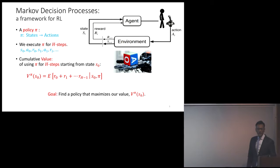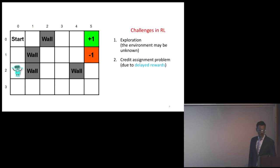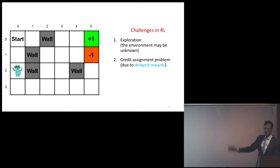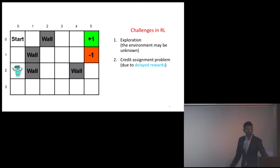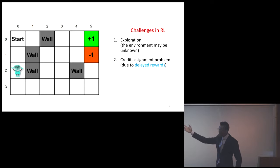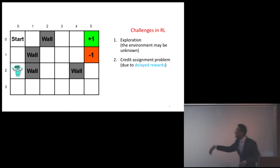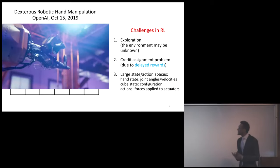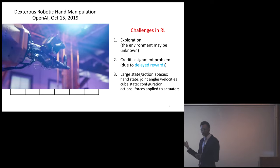What are the challenges in reinforcement learning? First, there's exploration — we might not know the environment, so the agent needs to wander around and might not know the dynamics. There's also the credit assignment problem: maybe it got a minus one reward but doesn't know which action it did wrong that led to that, because it doesn't get immediate feedback. And on top of this, we have large state and action spaces.